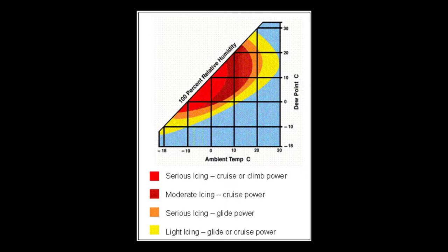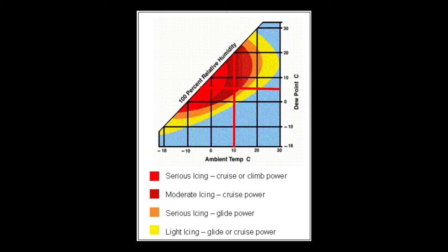We can use a chart to help determine when we're most likely to get carburetor ice. Looking at a METAR report: if it says 10 degrees Celsius with a dew point of 5, we're in a danger zone. But if it's 10 degrees Celsius with a dew point of minus 10 — very dry outside — there's much less likelihood of carburetor icing because there's far less moisture in the air.